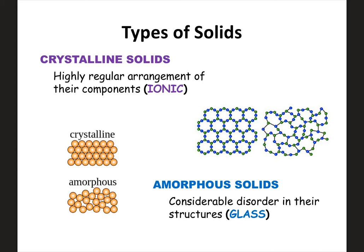Crystalline solids are like ionic compounds. If you remember, ionic compounds form crystals — they have this highly repetitive arrangement where you just repeat the formula unit over and over again, and they form these nice, organized, perfectly aligned structures where you have the opposite charges lining up. This would be an example of a crystalline solid. You can see how everything's lined up perfectly and it's very repetitive.